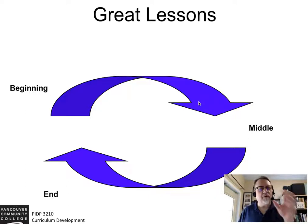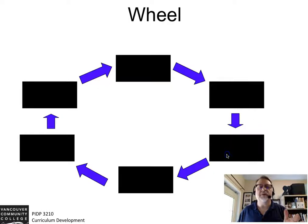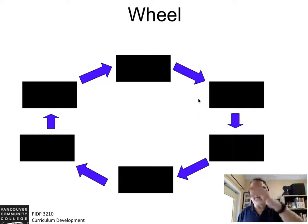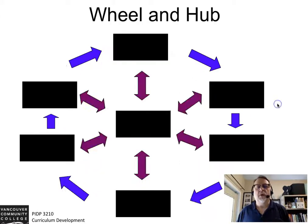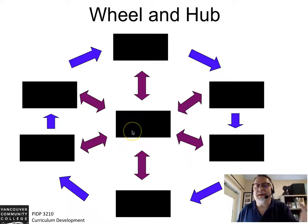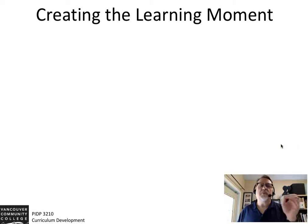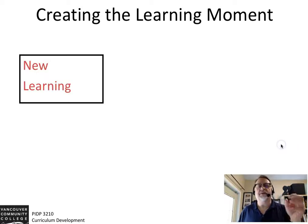Lesson planning can take a variety of different formats. It might be a linear chain — a sequence of events — or it might be a wheel where you go through a process that is somewhat iterative, or a wheel with a hub where that circular process connects to an example in the middle, or a linear sequence that connects to an application.